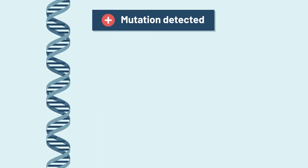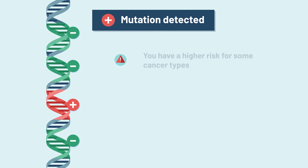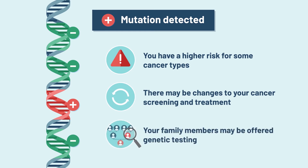Mutation detected means you have a mutation in one of the genes tested. Mutations can also be called pathogenic variants. This result means you have a higher risk for some cancer types, there may be changes to your cancer screening and treatment, and your family members may be offered genetic testing.